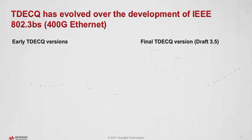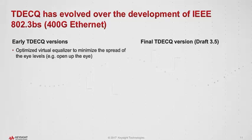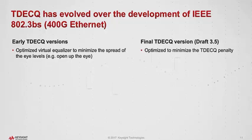One thing to note is that the TDEC-Q measurement has evolved since the start of 802.3BS. Very early TDEC versions optimized the equalizer by trying to minimize the spread on the eye level — minimizing ISI for maximum eye opening. In the latest draft 3.5, with all technical changes for BF essentially implemented, what needs to be optimized is the TDEC-Q number itself, and there are various ways to do that.